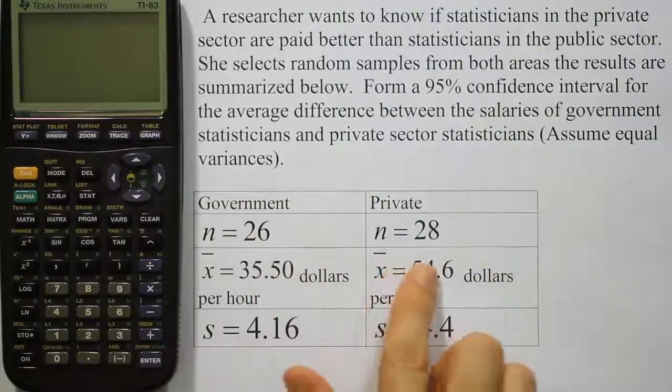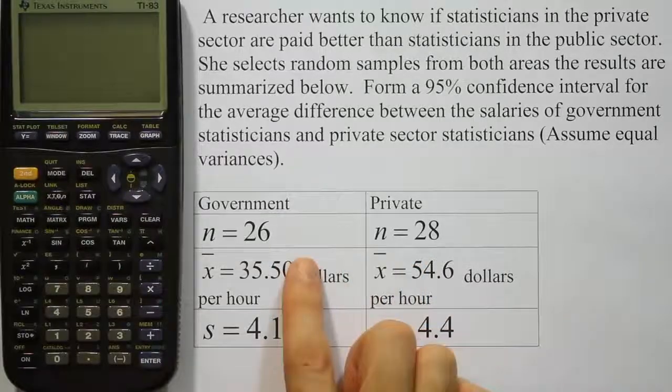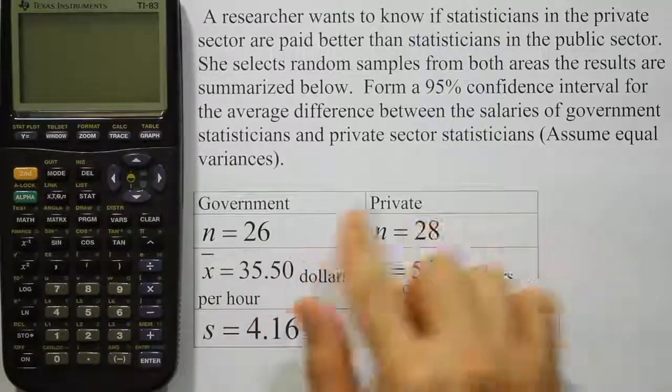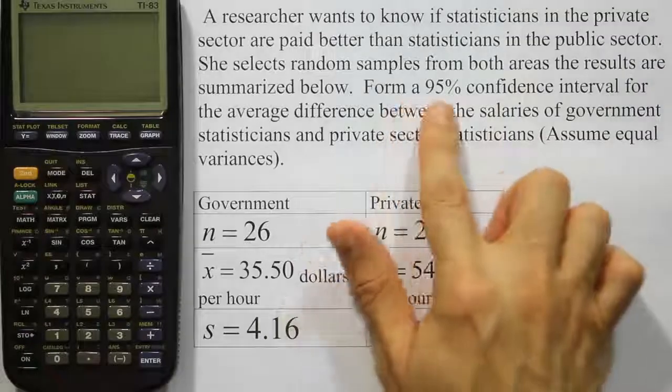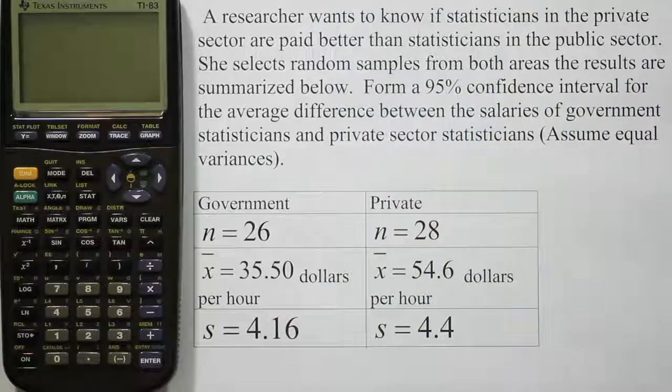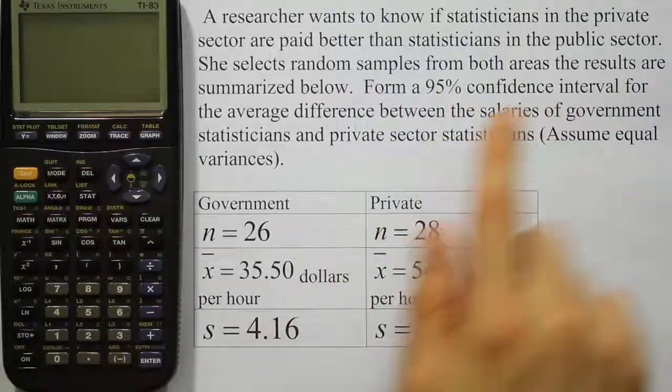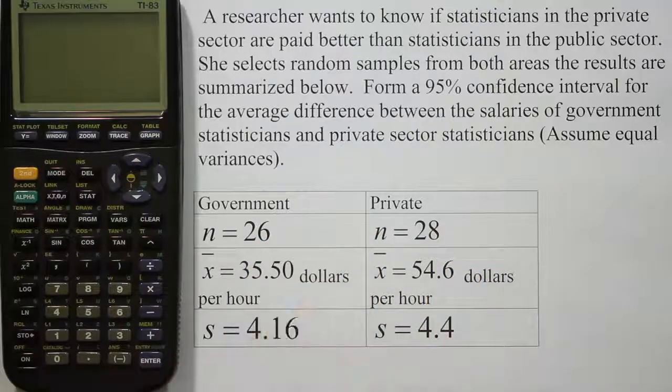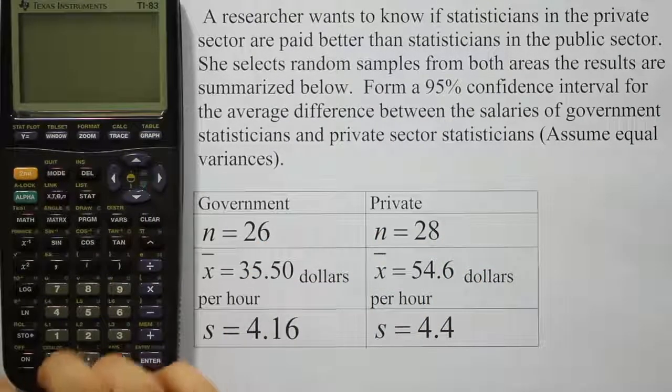So notice the sample sizes are small, so we're looking for a t-test here, or a t-interval I should say. T-interval because it says form a 95% confidence interval, right? So we're going to do a confidence interval using, because of these small sample sizes, the t procedure. So let's go ahead and do that then.